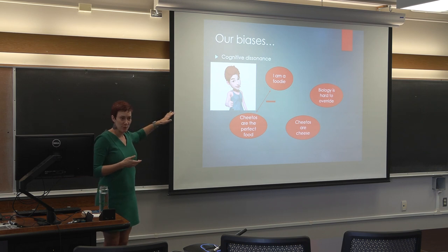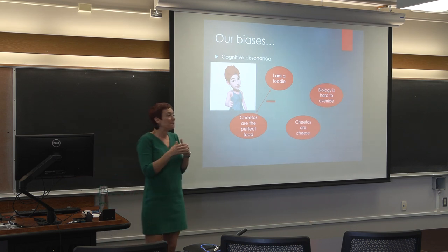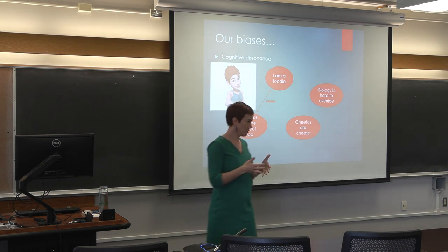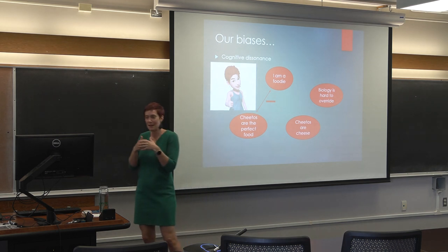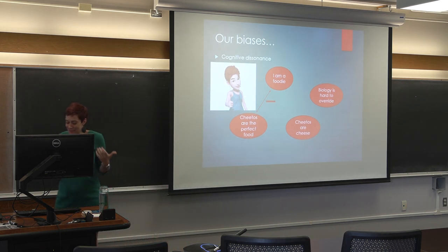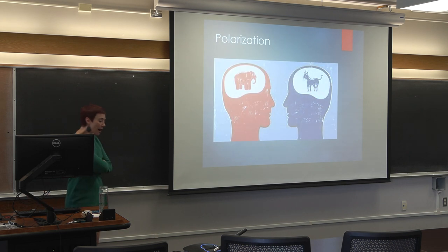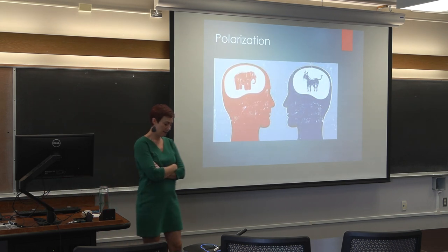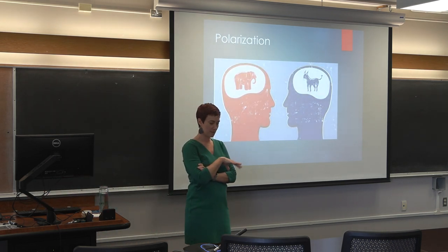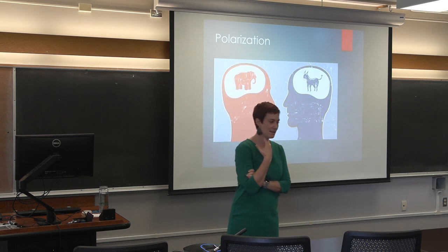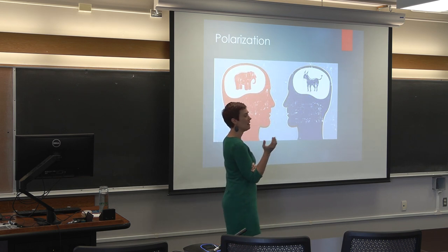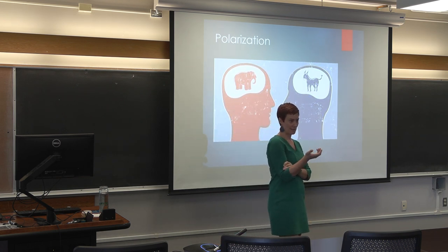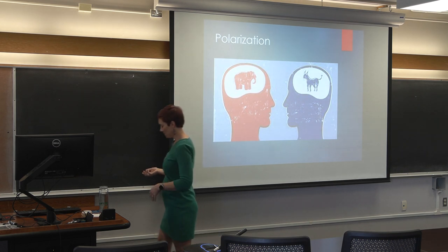That was a funny food example, but this happens in our political lives too — all the time we have inconsistent pieces of information we have to deal with. One problem we're facing in American democracy right now is polarization, which we're seeing as a potential outcome or consequence of these biased processes we have when approaching information.